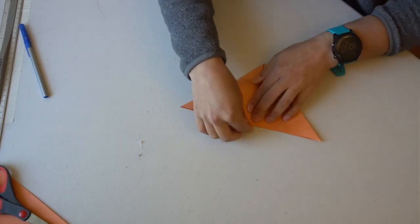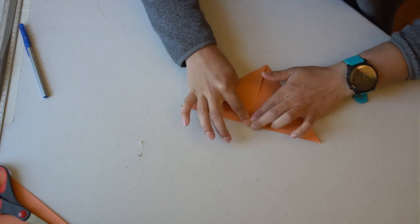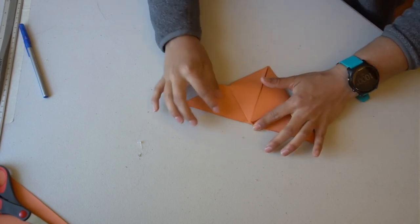After that, flip your piece of paper over and fold that small bit of triangle that went over the edge back onto the main part of your paper.